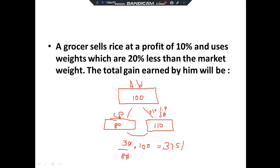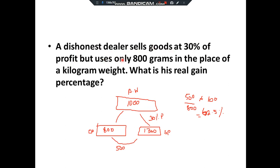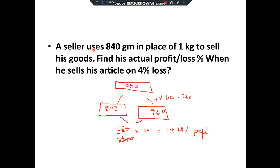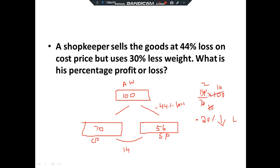Question 8: 'A dishonest dealer sells goods at 30 percent profit but uses only 800 grams in place of a kilogram. Find his real gain percentage.' Values are in grams so actual weight = 1000, cost price = 800, selling price = 1000 + 30% of 1000 = 1300. Find profit percentage. Question 9: 'A seller uses 840 grams in place of 1 kg and sells on 4 percent loss. Find actual profit or loss percentage.' Actual weight = 1000, cost price = 840, selling price = 1000 − 4% of 1000 = 960. Find profit or loss percentage.